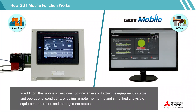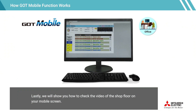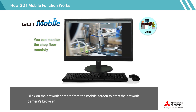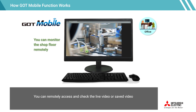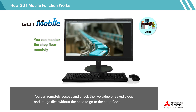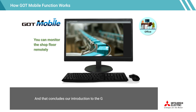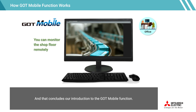In addition, the mobile screen can comprehensively display the equipment's status and operational conditions, enabling remote monitoring and simplified analysis of equipment operation and management status. Lastly, we will show you how to check the video of the shop floor on your mobile screen. Click on the network camera from the mobile screen to start the network camera's browser. You can remotely access and check the live video or saved video and image files without the need to go to the shop floor. That concludes our introduction to the GOT mobile function.